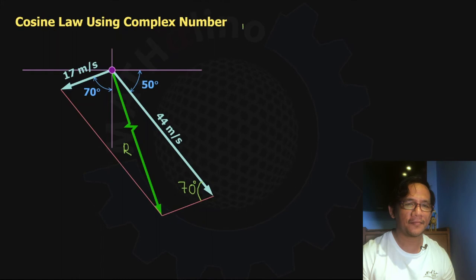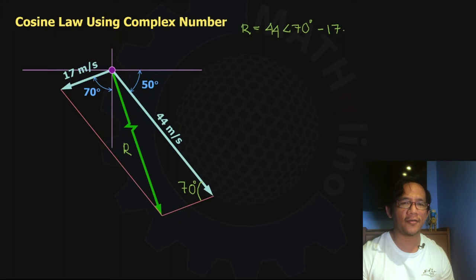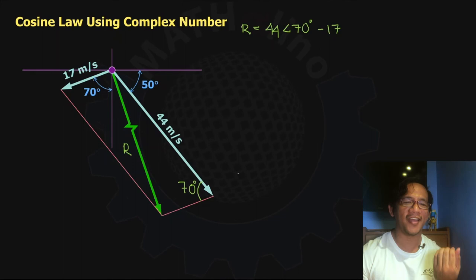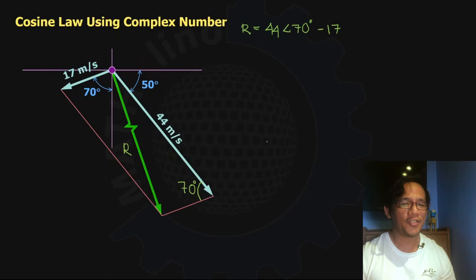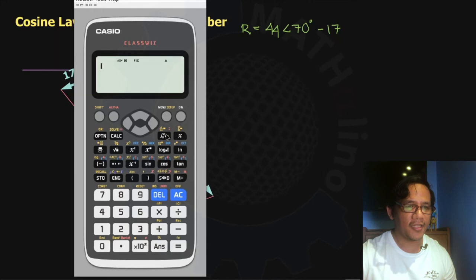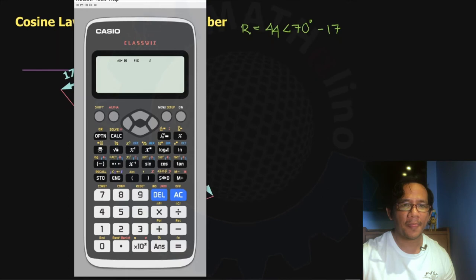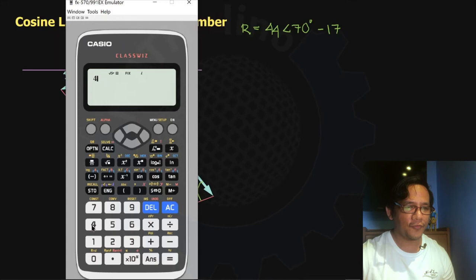Let us make the 17 meters per second the horizontal axis of our complex number. So R is equal to 44 angle 70 minus 17 angle 0. That 70 is measured from the 17 meters per second reference. When we say angle 0, we are going in the direction of the reference. Input that in the calculator in complex mode: 44 shift-angle 70 minus 17.